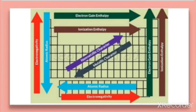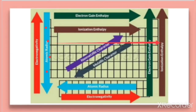Ionization enthalpy is the energy required to lose an electron. The elements on the extreme left have a high tendency to lose electrons, so they have the least ionization enthalpy. This tendency to lose electrons decreases as we move from left to right in a period, meaning elements on the right hand side have less tendency to lose electrons.